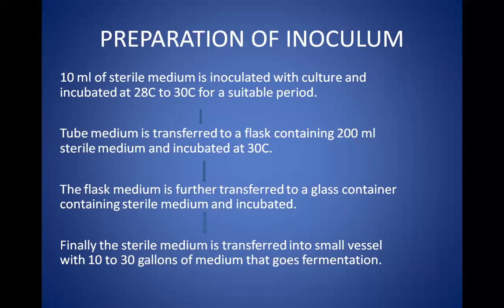For inoculum preparation, 10 ml of sterile medium is inoculated with the culture and incubated at around 28–30°C for a suitable period. This medium is then transferred to a flask containing 200 ml sterile medium and incubated at 30°C. From this flask, the medium is transferred to a glass container with sterile medium, and finally to a small vessel with 10–30 gallons of medium that goes for fermentation.